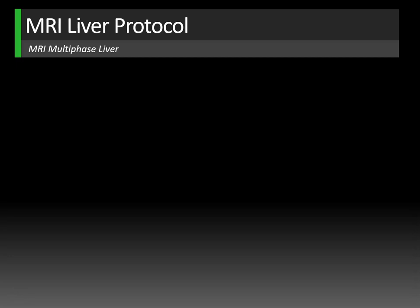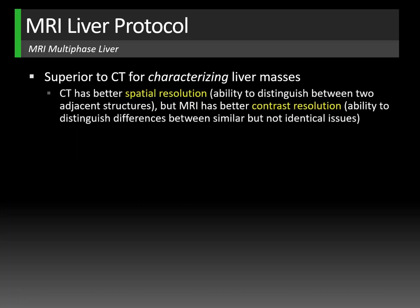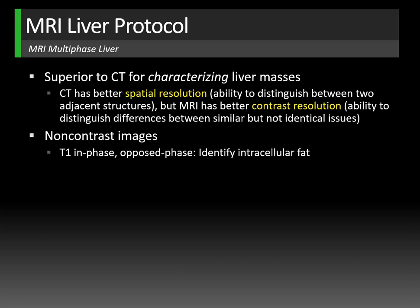MRI is superior to CT for characterizing liver masses because, while CT has better spatial resolution, MRI has better contrast resolution — the ability to distinguish differences between similar but not identical tissues. A multi-phase MRI includes non-contrast T1-weighted in-phase and opposed-phase gradient echo images, useful for identifying microscopic intracellular fat seen with hepatic steatosis, certain subtypes of hepatic adenoma, occasionally well-differentiated hepatocellular carcinoma, and rarely metastases from clear cell renal cell carcinoma.